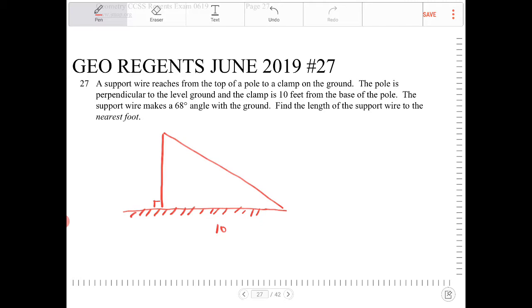The support wire makes a 68 degree angle with the ground. Find the length of the support wire to the nearest foot. So the adjacent side here is 10. Because we have a right triangle here.